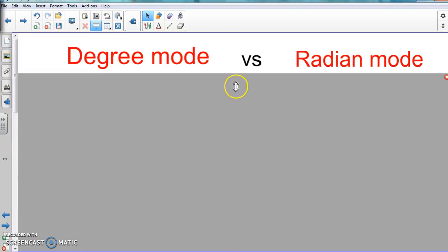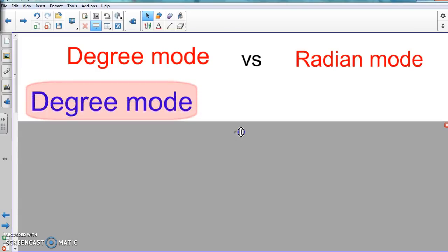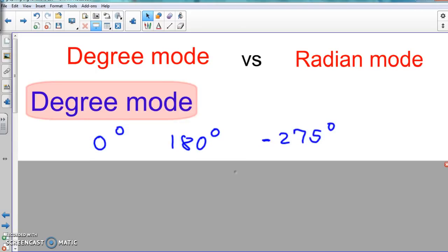So here, I'm going to give you an example of what degree mode is. These are examples of a degree: 0 degrees, 180 degrees, or negative 275 degrees.